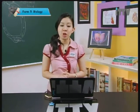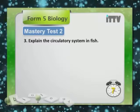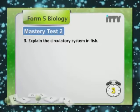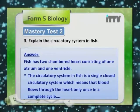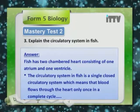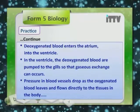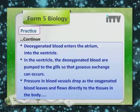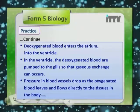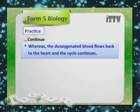Question 13: Explain the circulatory system in fish. Fish has a two-chambered heart consisting of one atrium and one ventricle. The circulatory system in fish is a single closed circulatory system, which means blood flows through the heart only once in a complete cycle. Deoxygenated blood enters the atrium into the ventricle, and in the ventricle it is pumped to the gills so that gaseous exchange occurs. Pressure in gills drops as deoxygenated blood leaves and flows directly to tissues in the body, then flows back to the heart and the cycle continues.